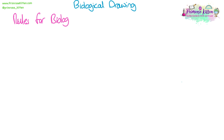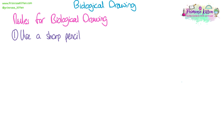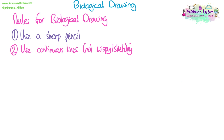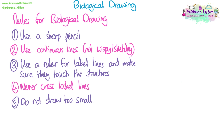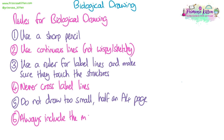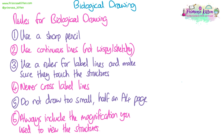Now for biological drawing rules. Always use a sharp pencil — no drawing should ever be done in pen. Your lines need to be continuous, not wispy or sketchy. Always use a ruler for label lines and make sure they touch the structure you are labelling. Never cross over your label lines. Do not draw too small — half an A4 page is about the right size, unless given a box in the exam, in which case fill it. Always include the magnification you used to view the structures.